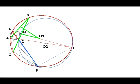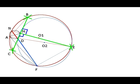First of all, let's find the center O1 of the circle in which triangle ABC is inscribed. This center is the point of intersection of perpendicular bisectors of sides AB and BC. Now we can draw the red circle, which is the circumcircle of triangle ABC.